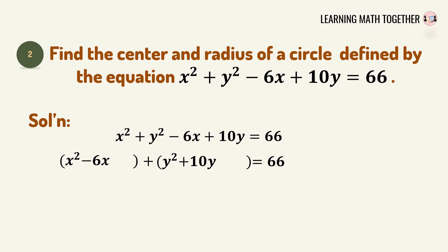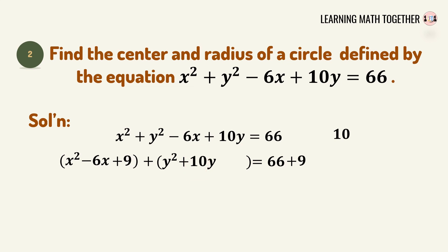Complete the square: get the numerical coefficient of x, which is 6. Divide by 2: 6 divided by 2 equals 3. Square 3, which equals 9. Add 9 on the left side and also add 9 on the right side. For the y variable, the coefficient is 10. Divide by 2: 10 divided by 2 equals 5. Square 5, which equals 25. Add 25 on the left side and also add 25 on the right side.